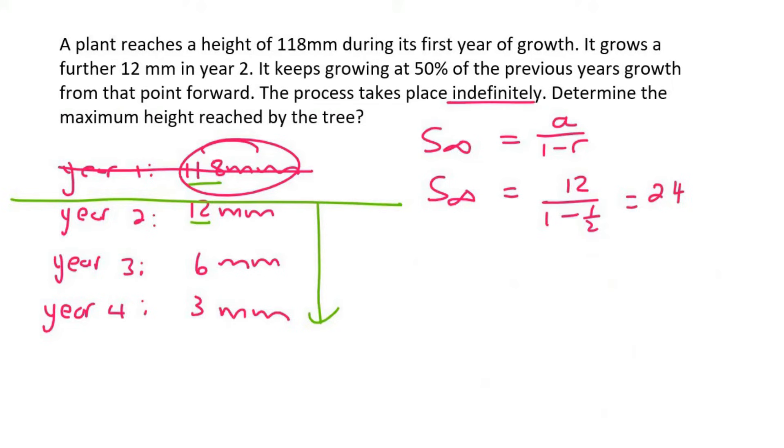And then what we must remember is that what this means is that from year two up until the tree stops growing, it'll grow a total of 24 millimeters. Because 12 plus six plus three, and then these numbers are just getting smaller and smaller. And eventually they will reach zero. So it grows 24 millimeters.